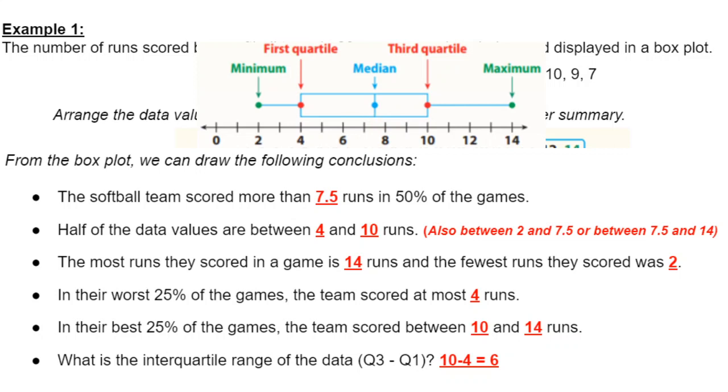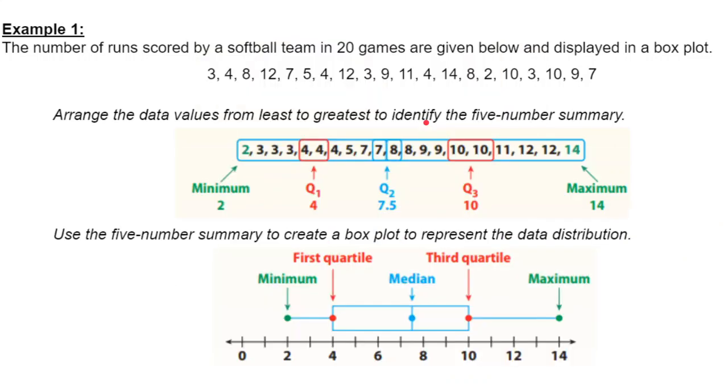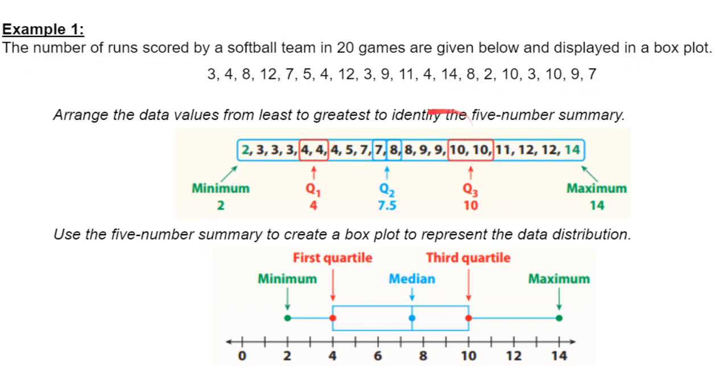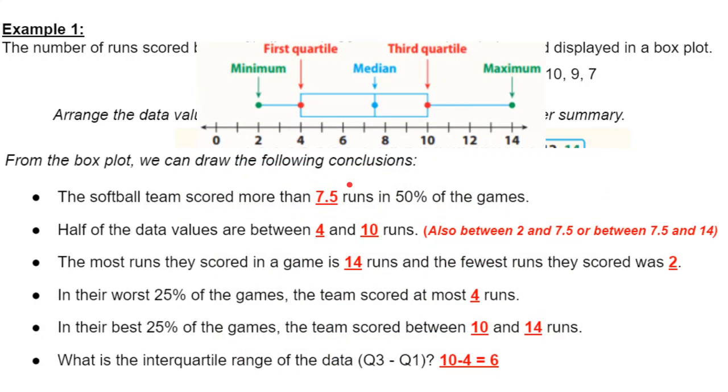Then we have half of the data values are between four and ten runs. Well, that's because it's the first to the third quartile. The first and the third quartile, you see that that's half of these pieces here. That's four boxes, and there's eight boxes in total. From quarter one to quarter three is 10 pieces of data. Well, half of 20 is 10. You could do this for a bunch of different parts of the data, but you can also say that between two and 7.5 - two is the beginning of the first quartile, and 7.5 is the median. 7.5 and 14 - that's the second half of the data.